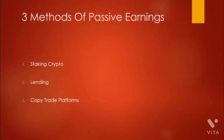Then we have the second method which is lending. There are platforms like peer-to-peer lending platforms where, for example, if you have Bitcoin, Ethereum, or any other type of cryptocurrency, you can lend that cryptocurrency and earn interest on it. Usually it's somewhere between 10% and goes up to even 25, 30, or 40 percent per year depending on the cryptocurrency. But the average you should consider is somewhere between 10 and 12 percent.